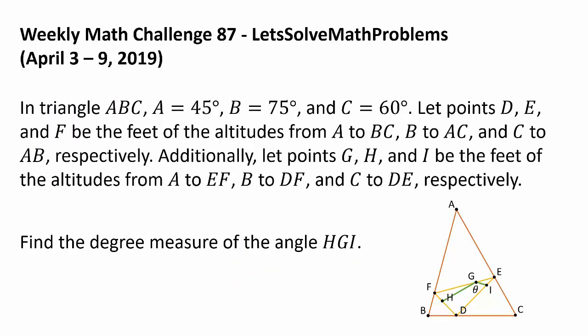In triangle ABC, A is 45 degrees, B is 75 degrees, and C is 60 degrees. Let points D, E, and F be the feet of the altitudes from A to BC, B to AC, and C to AB respectively.